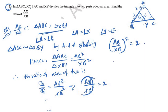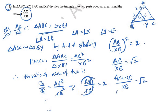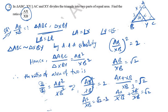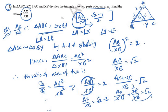From AB/XB = √2, since AB = AX + XB, we write (AX + XB)/XB = √2. Dividing: AX/XB + 1 = √2. Therefore AX/XB = √2 − 1. So the ratio AX : XB = (√2 − 1) : 1.